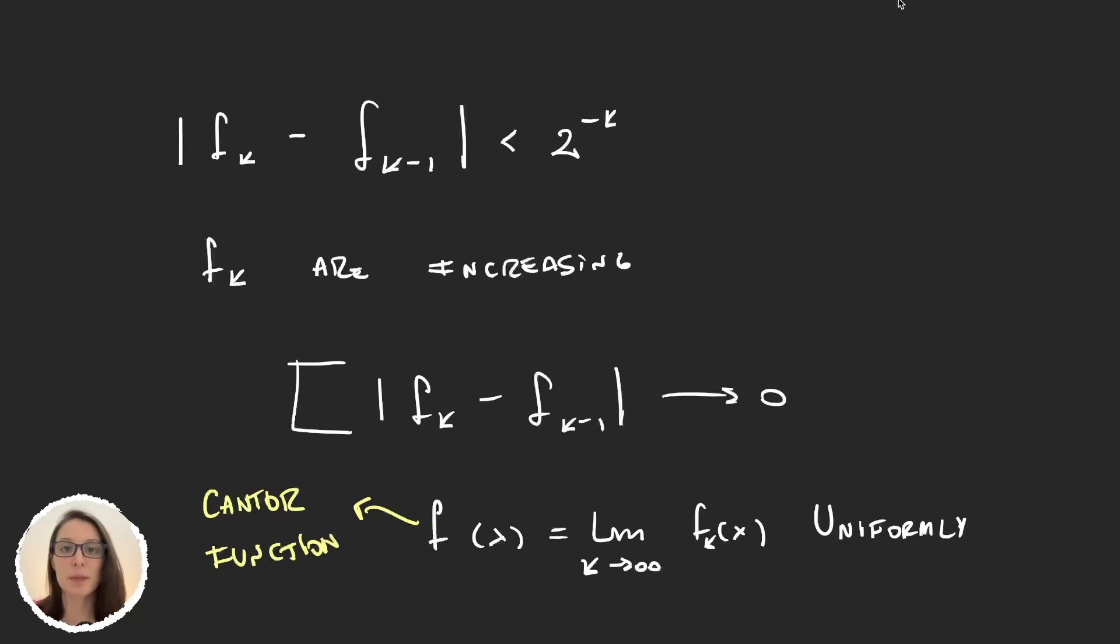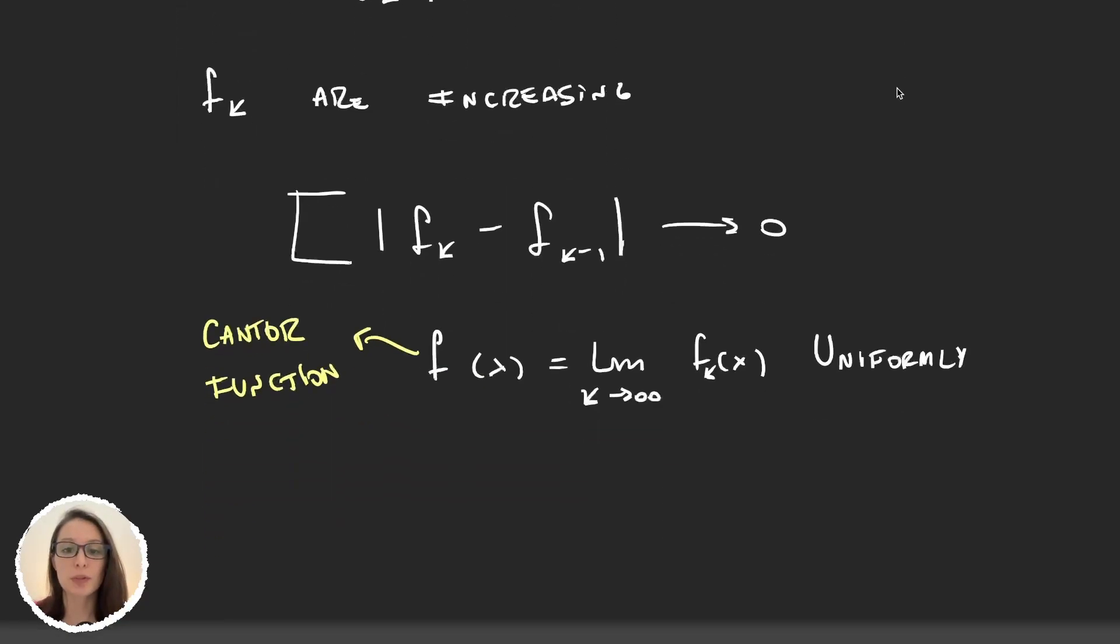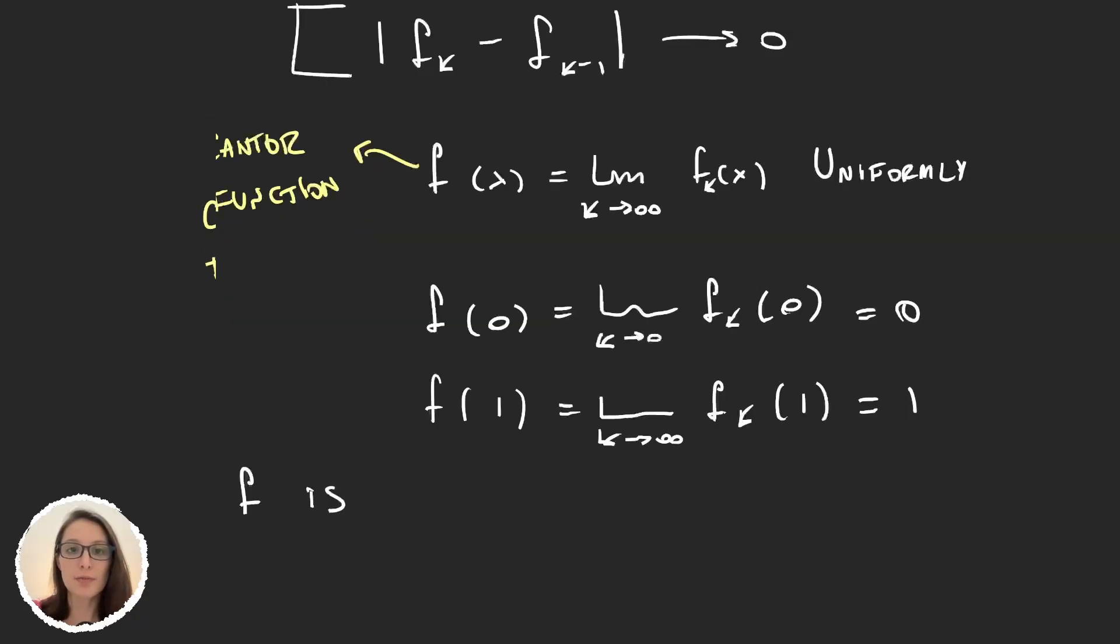Let's see a few of the properties this function has. First of all, it's pretty obvious that f(0) equals 0, because it will be the limit when k tends to infinity of f_k evaluated in 0, and all of the functions in 0 have the same value, so this is 0. Similarly, f(1) is the limit when k tends to infinity of f_k evaluated in 1, which is also 1. What this is telling us is each function f_k was continuous, and this is a uniform limit, so in consequence f is continuous.